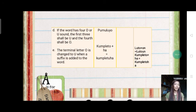Letter e. The terminal letter o is changed to u when a suffix is added to the word. The rule here is when you add suffix to the word, we need to change the letter o to u.